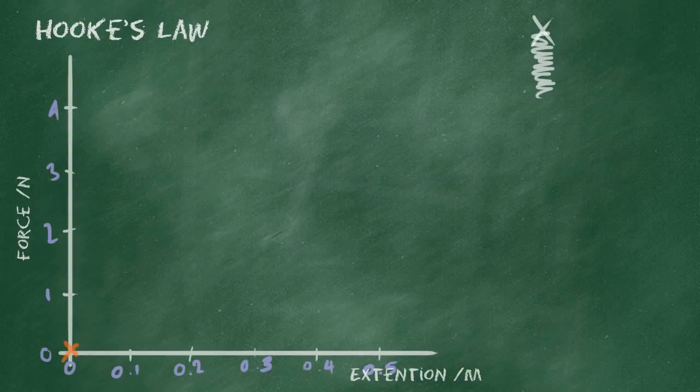Then you add a mass. You add a one newton mass. And you measure what's called the extension. Now I need to make it very clear to you, the extension is the change in length. So from the original length here to the new length there. And we measure this extension, given the letter E, and we plot the data point.